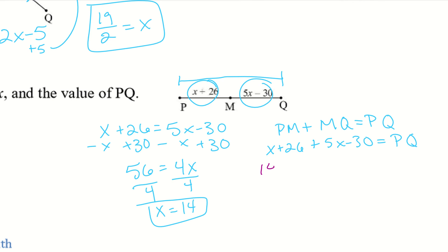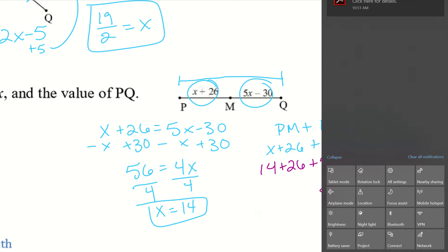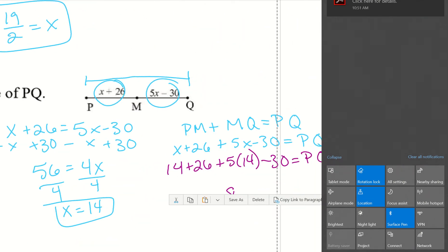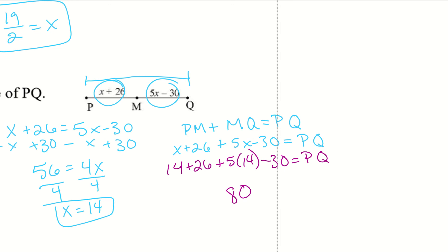I accidentally clicked on a notification. So X equals 14 plus 26. And then I have plus 5 times 14, because it's 5 times X minus 30 equals PQ. So from here, you can just plug this into a calculator. So 14 plus 26 plus 5 times 14 minus 30. So once you do that, I ended up with 80. Hopefully you did too. So 80 is PQ.